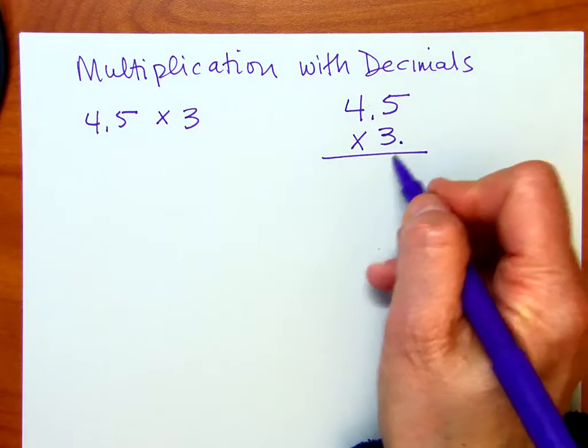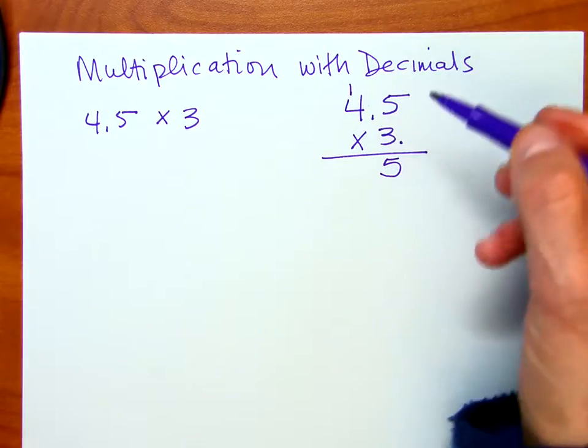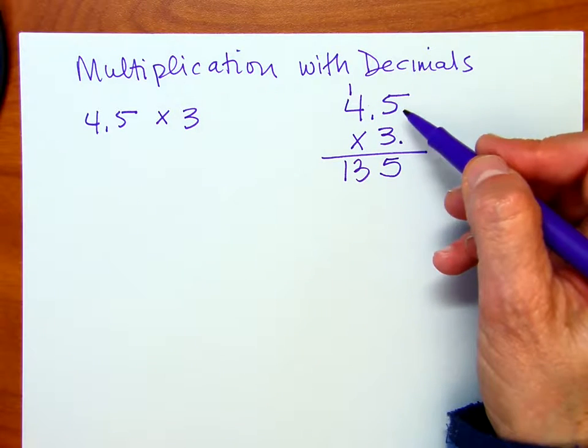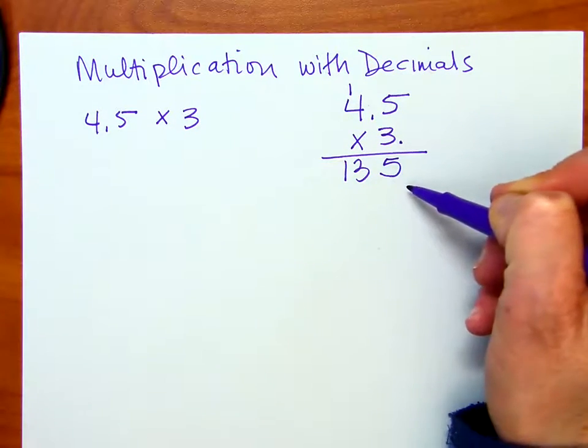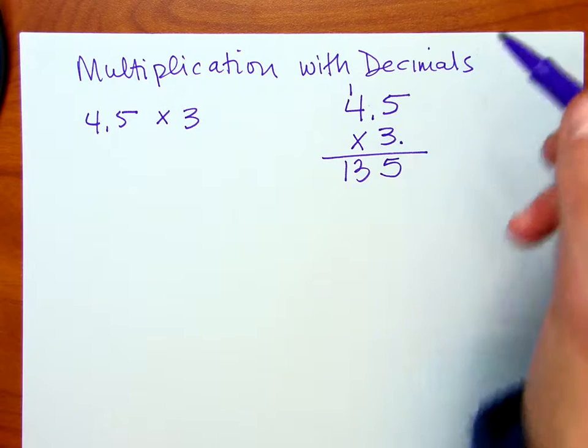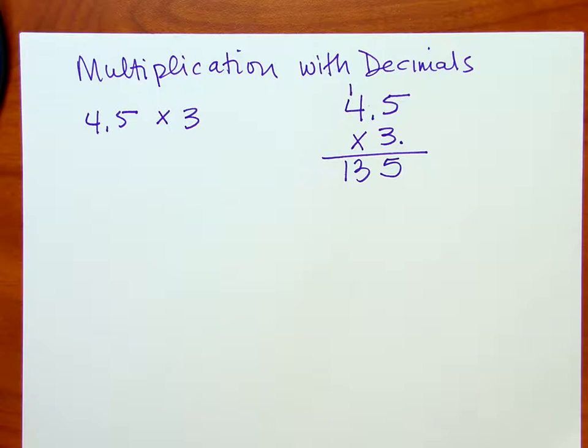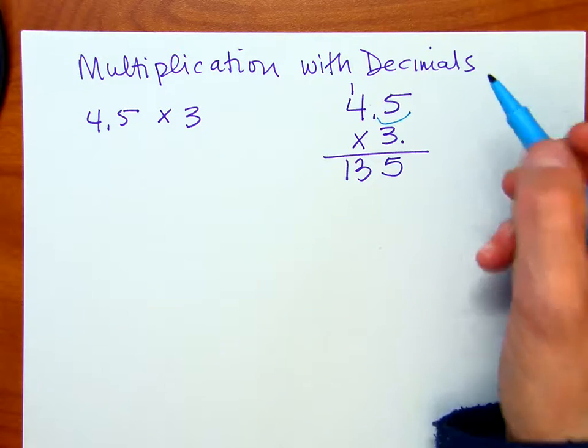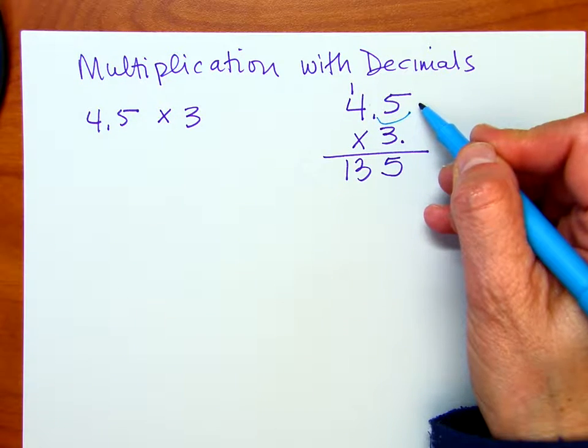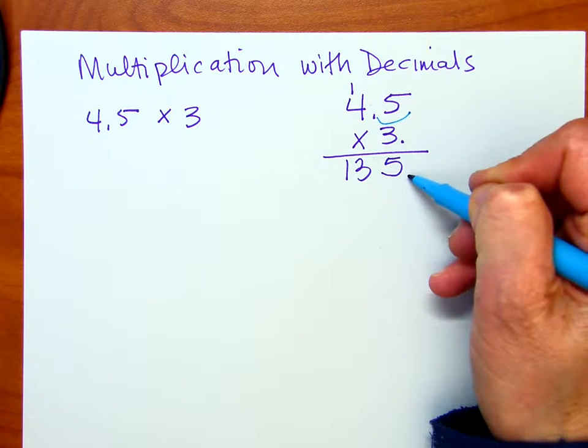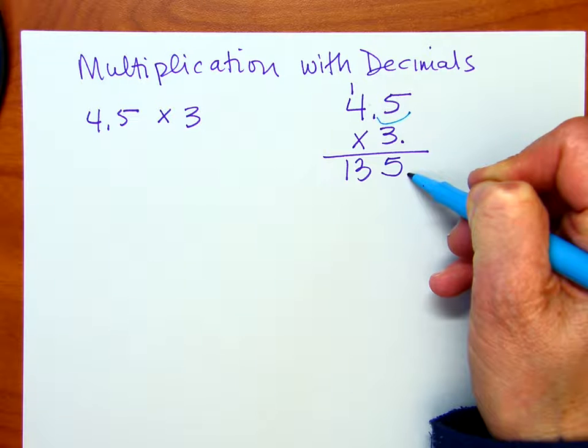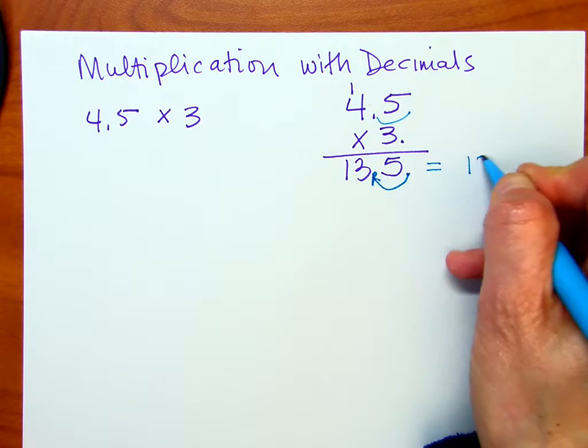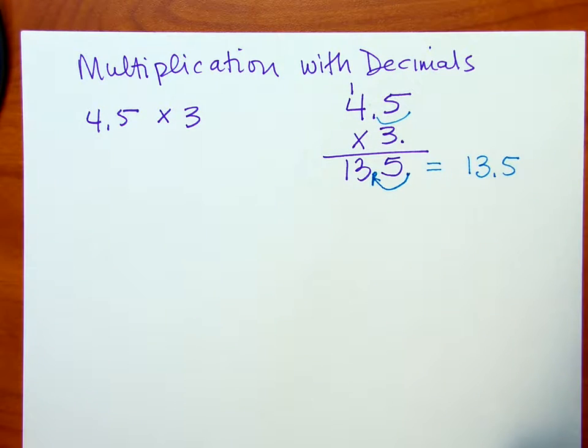3 times 5 is 15. We're going to carry the 1. 3 times 4 is 12, plus 1 is 13. Now 4.5 times 3 is not 135. And this is where we want to go back and count the decimal places that each factor contained. In this case, we have one decimal place. So because we have one decimal place in one of our factors, we're going to go ahead and move the decimal point from this location to the left. Now we have 13.5 or 13 and 5 tenths.